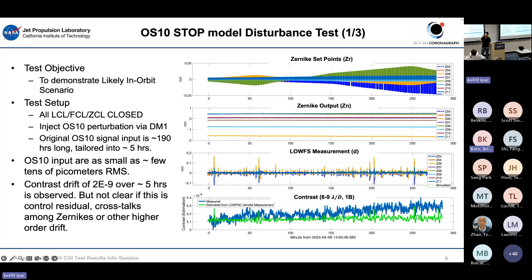Our best dark hole is about 2×10⁻⁸ level for this single band. After perturbation and changes, our starting dark hole is about 5×10⁻⁸. LOWFS predicts a slight drift, but we observed more drift than LOWFS was expecting. Understanding the cause of this drift is very important, but we don't know yet. We're looking at it from different angles. It could be control residual from LOWFS, crosstalk between Zernike modes, or some high-order residual from unknown sources — we still don't know.